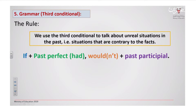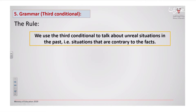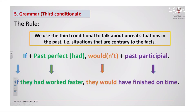So this is the rule: if + past perfect (had) + would or wouldn't + past participle. Now let us apply it to the first sentence. If — as you see here — then the past perfect: 'they had worked' — 'had worked' is the past perfect. Then 'would' and the past participle 'have finished on time.' This is the main rule of the third conditional, and you can apply it to all the other sentences.